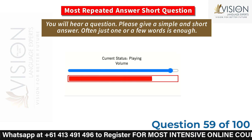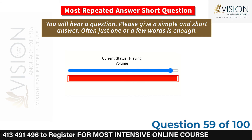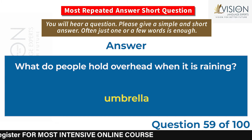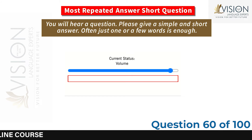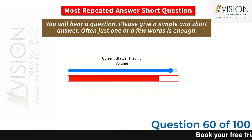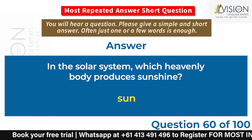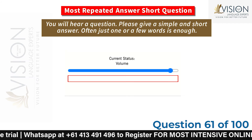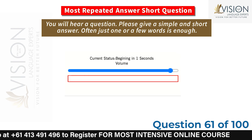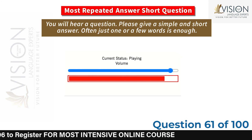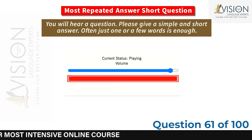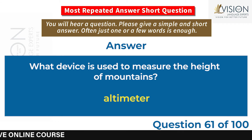What do people hold overhead when it is raining? Umbrella. In the solar system, which heavenly body produces sunshine? The Sun. What device is used to measure the height of mountains? Altimeter.